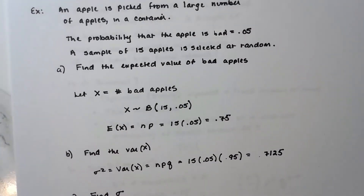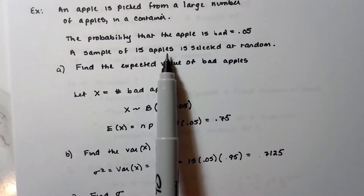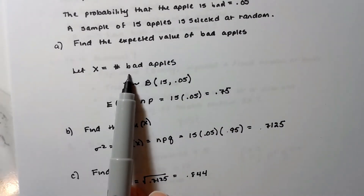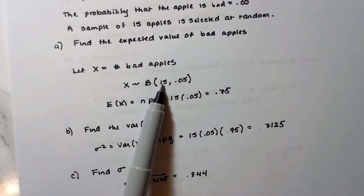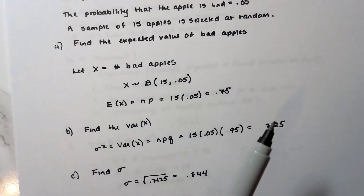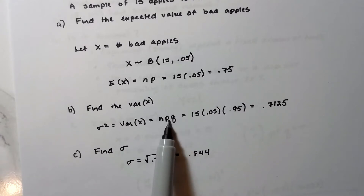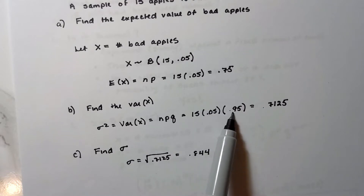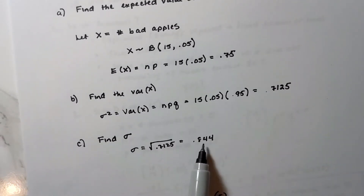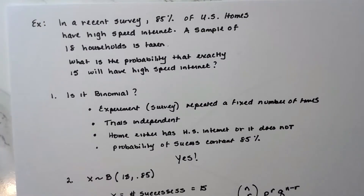Example: an apple is picked from a large container. The probability that an apple is bad is 0.05. A sample of 15 apples is selected. Find the expected number of bad apples, variance, and standard deviation. X ~ Binomial(n=15, p=0.05). Expected value = np = 15 × 0.05 = 0.75. Variance = npq = 15 × 0.05 × 0.95 = 0.7125. Standard deviation = √0.7125 ≈ 0.844.